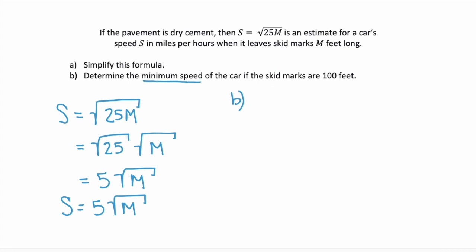Well, minimum speed. Speed is s. So we're looking for s. And skid marks are 100 feet. Well, skid marks are m. So we know the value for m is 100.